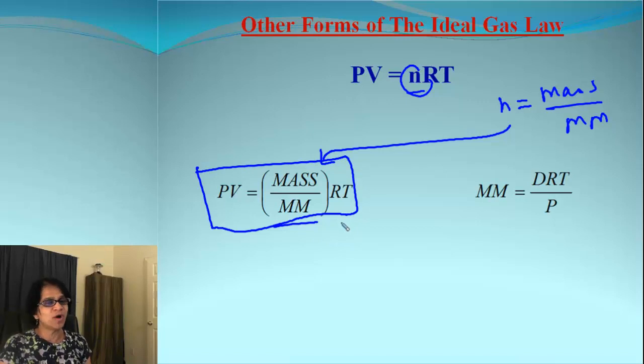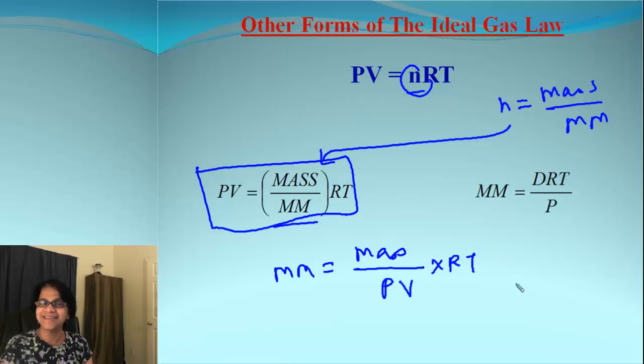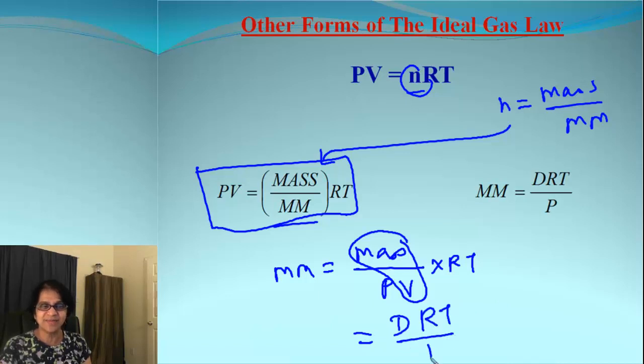And now let me do one more thing. If I rearrange this, then I am going to end up with molar mass equals mass divided by P times V, times R and T. Now look carefully. Here we have mass divided by volume. What is it? That is equal to simply density. So if I put that density, everything else remains the same and I get a new formula. Molar mass is DRT over P.